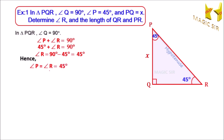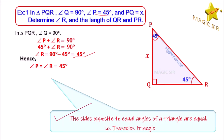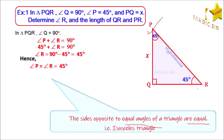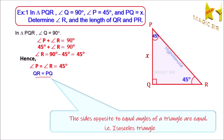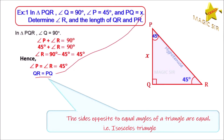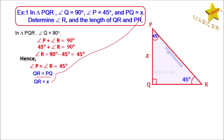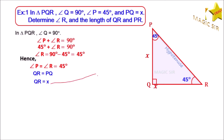Hence, angle P is equal to 45 degrees, so angle P is equal to angle R. And we know that the sides opposite to equal angles of a triangle are equal. The side opposite to angle P is QR, and the side opposite to angle R is PQ. So we can write QR is equal to PQ. But PQ is equal to X, so QR is equal to X. We write QR equal to X in the figure.